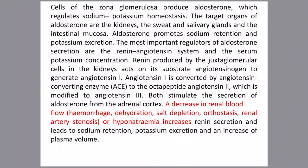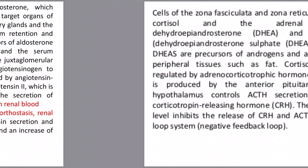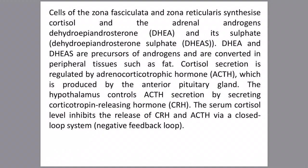Increased renin secretion leads to sodium retention, potassium secretion, and an increase in plasma volume. Cells of the zona fasciculata and reticularis synthesize cortisol and the adrenal androgens — dehydroepiandrosterone (DHEA) and its sulfated form — which are precursors of androgen converted in peripheral tissues, usually fat.